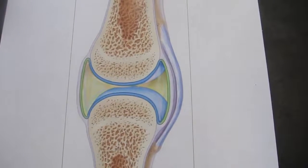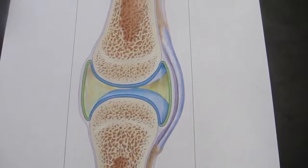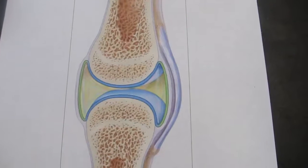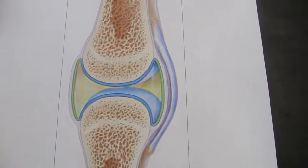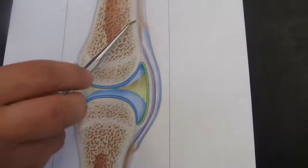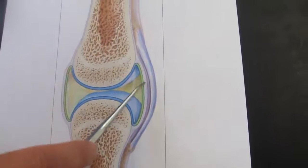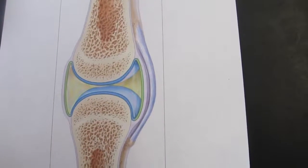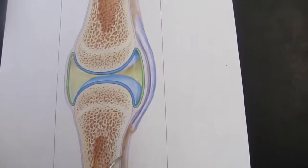It's made of dense irregular connective tissue, and it's there to make sure that the bones stay in alignment in our joint. It also connects the periosteum of one bone to the periosteum of the other bone.